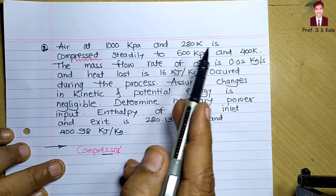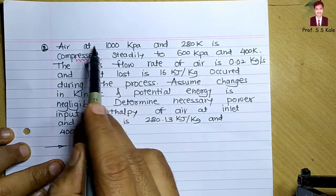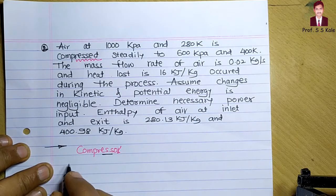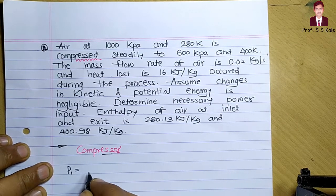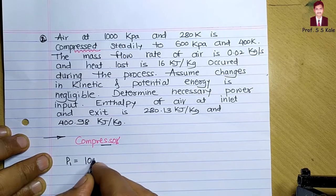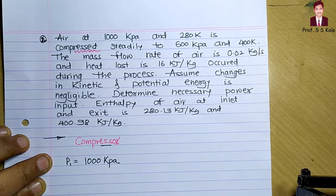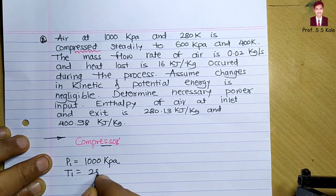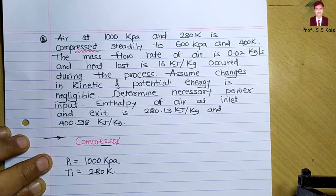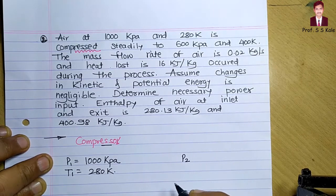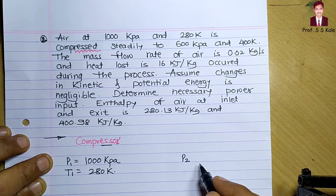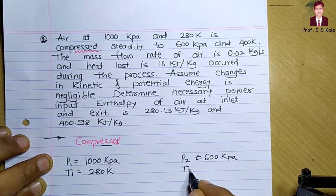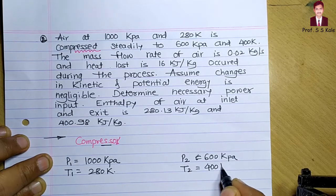The initial condition: pressure P1 is equal to 1000 kilopascal and temperature T1 is 280 Kelvin. The final condition: pressure P2 is given as 600 kilopascal and temperature T2 is equal to 400 Kelvin.